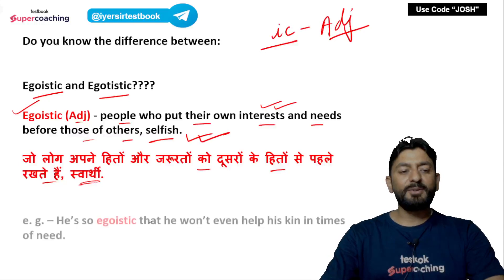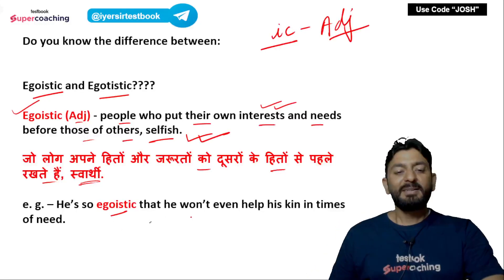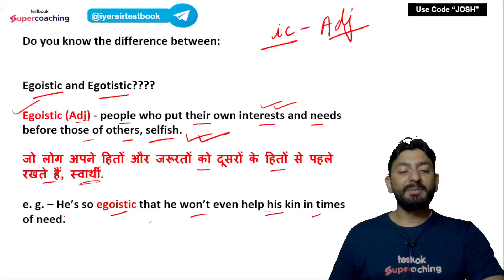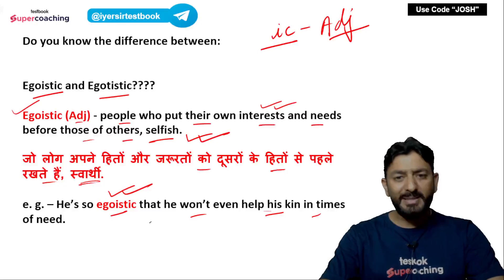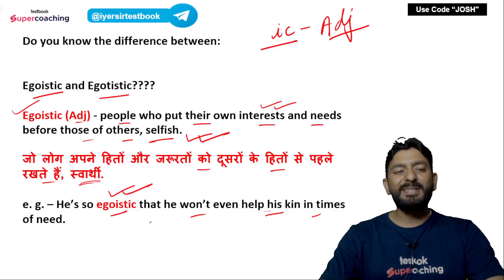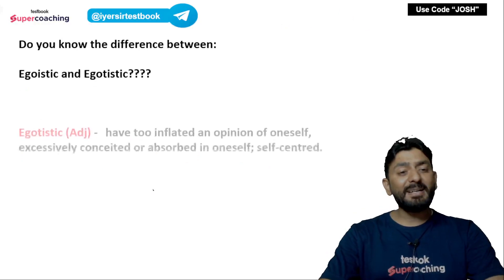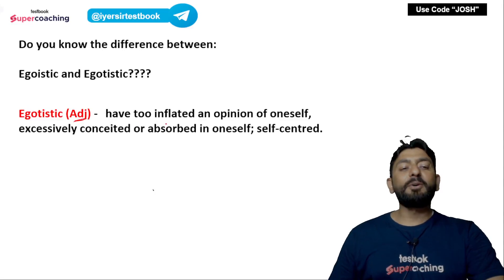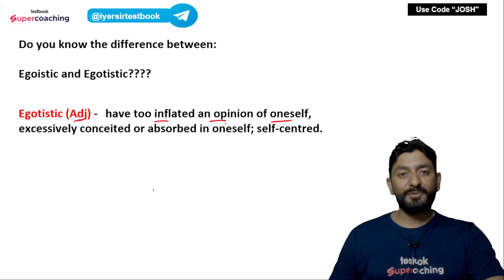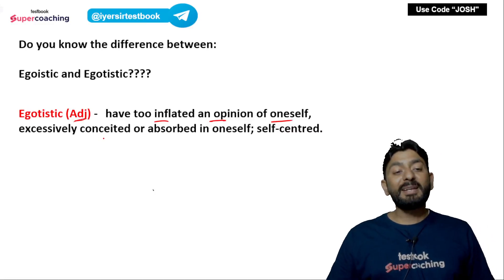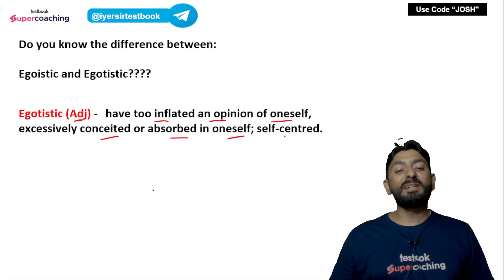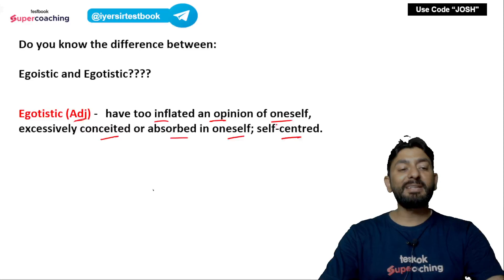A sentence using 'egoistic': वो इतना ज़्यादा स्वार्थी है कि वह अपने रिश्तेदारों की भी जरूरत के समय पर मदद नहीं करेगा. Now, 'egotistic' is also an adjective, but it means to have too inflated an opinion about oneself — excessively conceited or absorbed in oneself, self-centered. बहुत ज़्यादा अहंकार होना — that is egotistic.